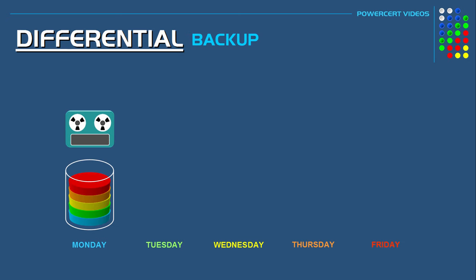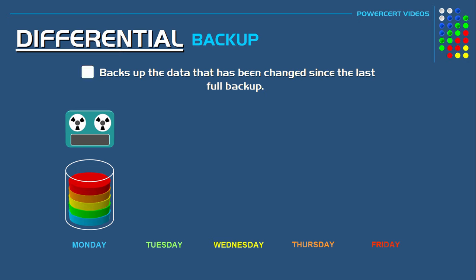Now a differential backup is faster than a full backup, but it's not as fast as an incremental backup. In a differential backup, the data that is backed up is the data that has been changed since the last full backup. So going back to our example, a company does a full backup on Monday and does differential backups Tuesday through Friday. As data is being added to the database on those weekdays, the differential backup will back up the data that has been changed since Monday's full backup.